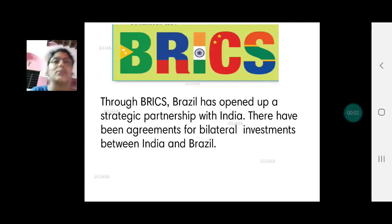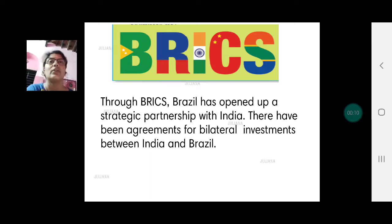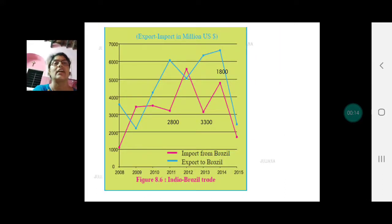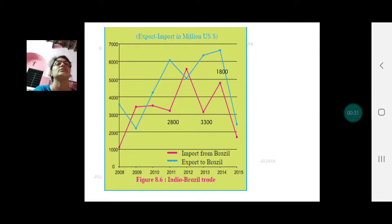Welcome back children to our last video for Chapter 8 - Economy and Occupation. Today we are completing the activity on page 59, where you have a multiple line graph. It shows India's trade with Brazil — that is, India's exports to Brazil and India's import value from Brazil — and the value is given in million US dollars.